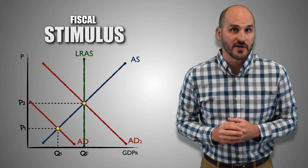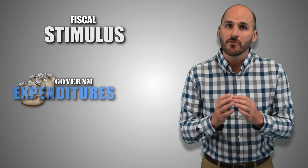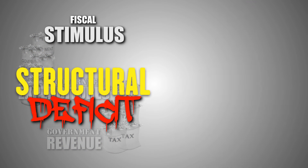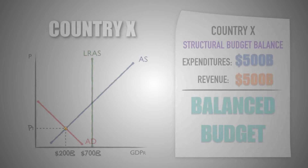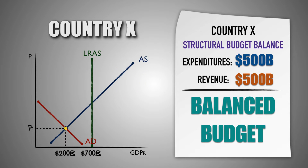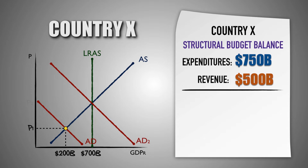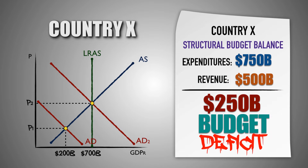While these policies may increase aggregate demand and create economic growth, the government is spending more and losing revenue, causing the federal budget to move toward a deficit. For example, suppose that the economy of country X is experiencing a $500 billion recessionary gap, the marginal propensity to consume is 0.5, and the budget is balanced. If the government passes fiscal stimulus that increases its spending by $250 billion, it would increase aggregate demand and generate $500 billion in real GDP output, returning the economy to full employment. However, if the government doesn't raise taxes by $250 billion to fund the new government spending measures, then it would open a $250 billion budget deficit in country X.